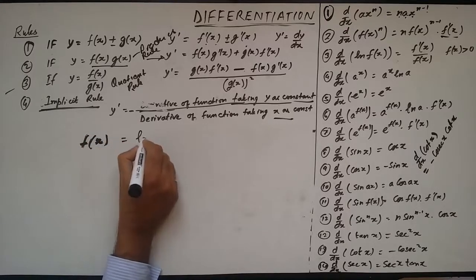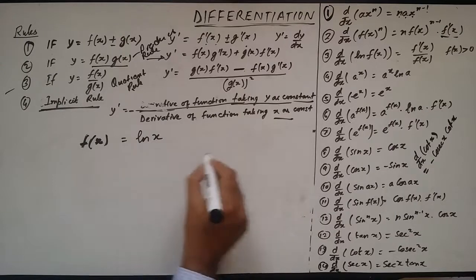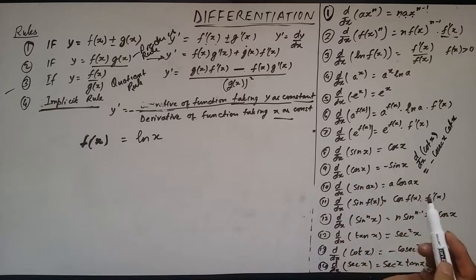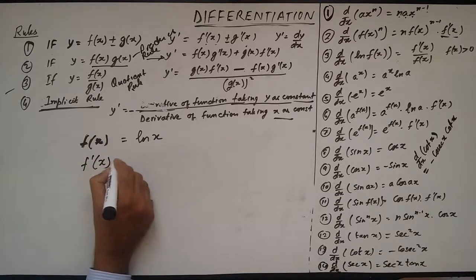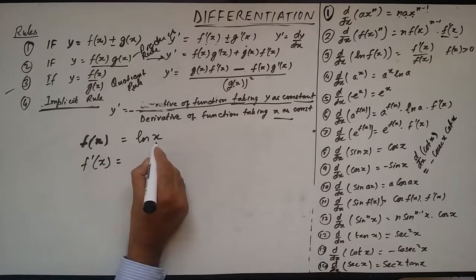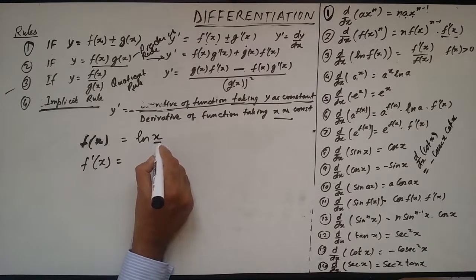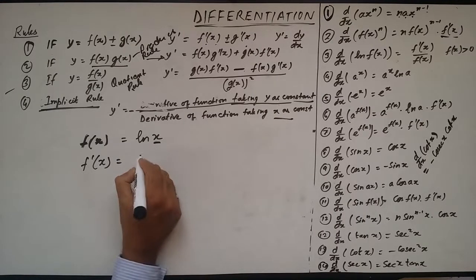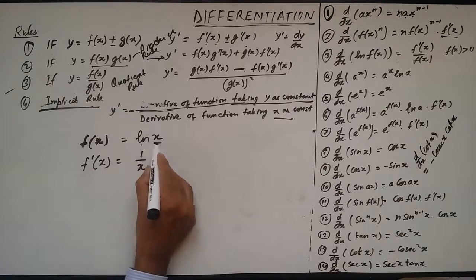f(x) is equal to ln of x. We know that the derivative of a logarithm function — f'(x) — is equal to the derivative of the inner function upon that function itself. So the derivative of x is 1, and upon that function which is x, so the answer is: the derivative of ln(x) is 1 upon x.